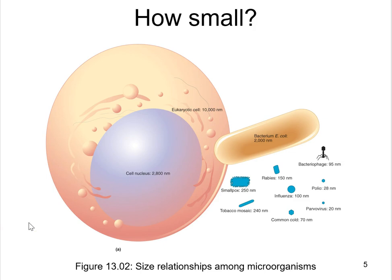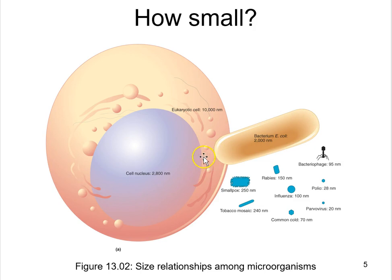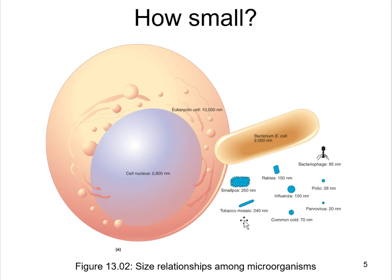This figure depicts some averaged-size organisms and entities related to life. An animal cell — like one of our own eukaryotic cells — is about 10,000 nanometers or 10 micrometers across; a cell nucleus around 2,800 nanometers. An E. coli bacterial cell is also shown. All of these smaller entities are different kinds of viruses: bacteriophage infect bacteria; polio, parvovirus, smallpox, rabies, influenza, and various coronaviruses that cause the common cold are all animal viruses.